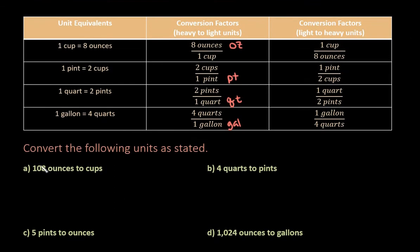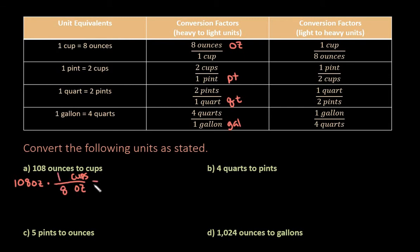The first one that we have is we're going 108 ounces to cups. So we can see that there is a direct conversion for ounces and cups. So what we are going to do is we want to get rid of ounces and end up with cups. We would look for the one that has ounces on the bottom. So eight is on the bottom, we would put an eight down here and a one up here. Because our ounces cancel out, all we would have to do is 108 divided by eight. It does not go in evenly, but it is a nice concise decimal — this ends up being 13.5 cups.